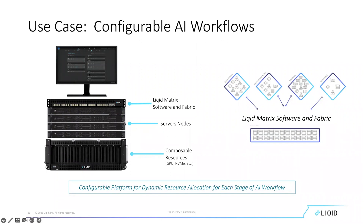When server one needs to do data ingest, we grab a couple of networking cards and connect them to server one, enhancing its data ingest capability. When server three needs to run a machine learning algorithm, we grab four A100s and connect them to server three — it thinks those are local devices on its motherboard, runs the machine learning algorithm, and when it no longer needs those devices, we free them back into the free pool.